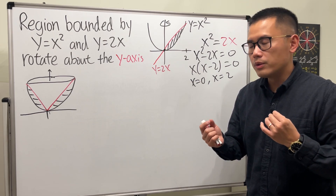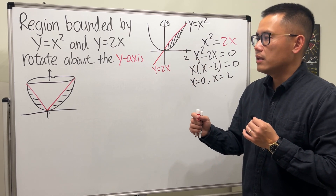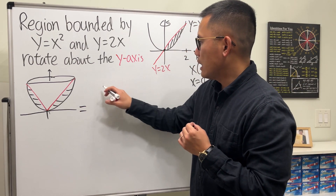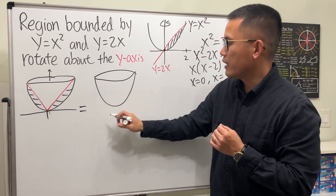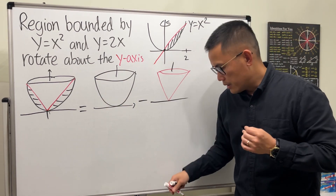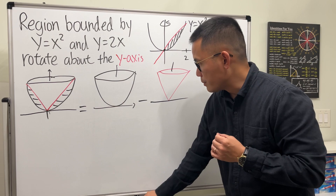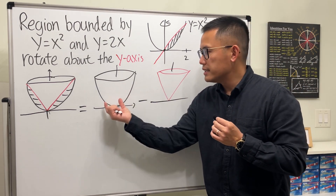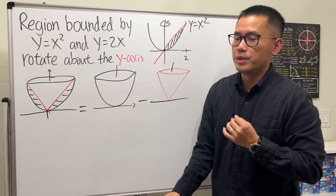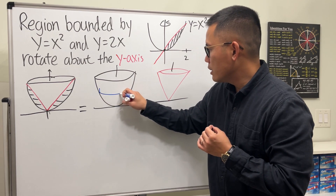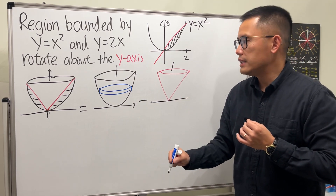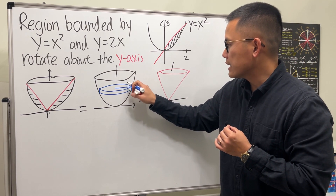If you're going to use the washer method, you take the outer solid and subtract the middle part. It's essentially a disk method — it's called the washer method because there's a hole, a missing part in the middle. We place the disk horizontally, and you'll see that the radius is the horizontal distance, which is the x value.